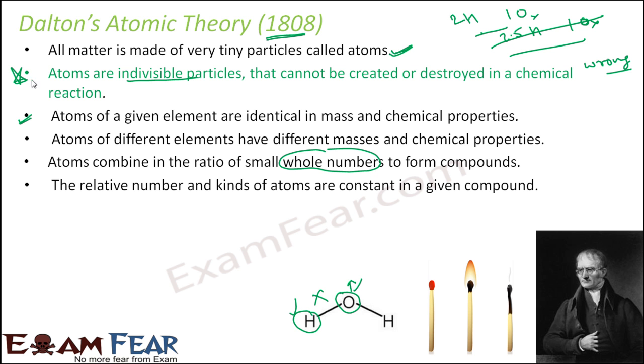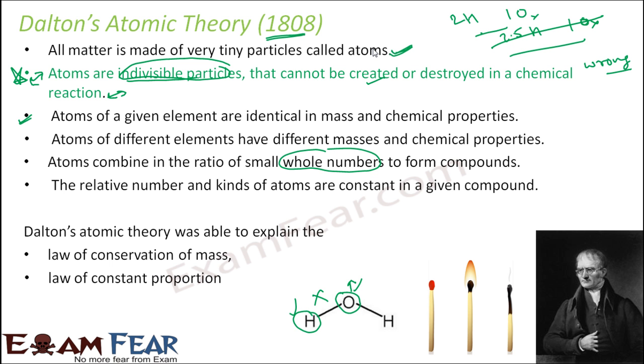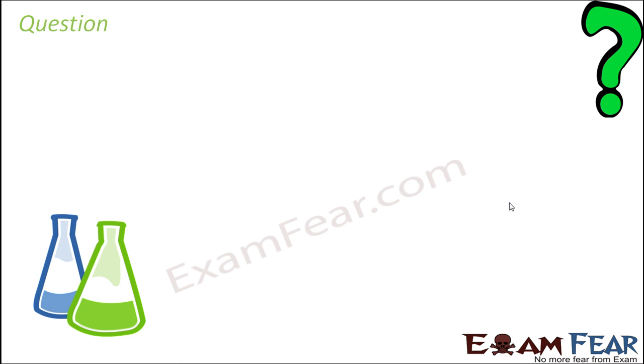All these points were correct, but only the second point was not true because with the current advancement in science, we are in a position to break these particles. And the scientists have actually created and destroyed atoms as well. So this Dalton theory actually was able to explain the law of conservation of mass and law of constant proportion. See, the law of constant proportion, if you see, this talks about the law of constant proportion. So this is a big success. So let us take some questions now to understand these concepts better.